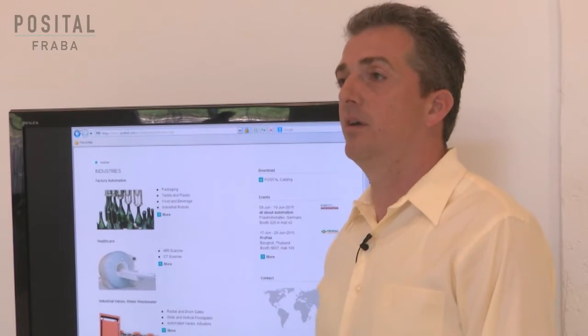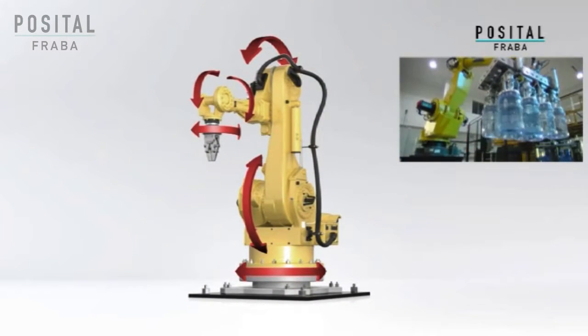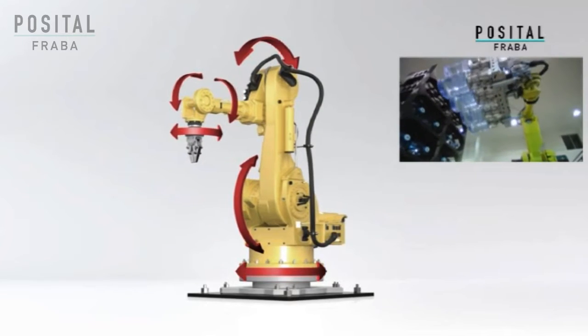Posital Fraba sensors are used in many different industries including factory automation for any type of manufacturing equipment, converting equipment, packaging equipment, and more.